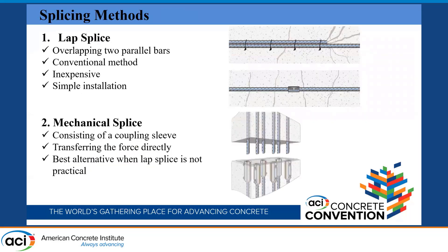In general, there are two common methods for splicing bars. The first is lap splicing, which is a traditional method of overlapping two parallel bars, commonly used in construction because of simple installation and low cost. The second method is mechanical splicing, which uses a coupling sleeve to connect two bars together, and it is the best alternative when lap splicing is not practical.